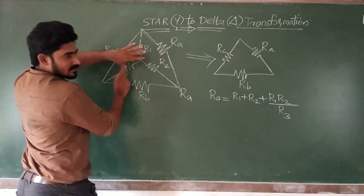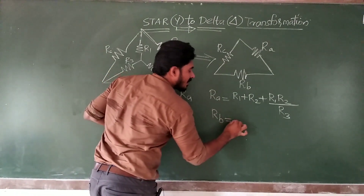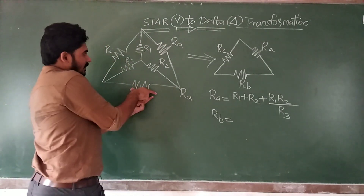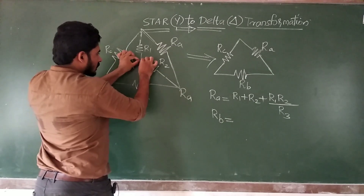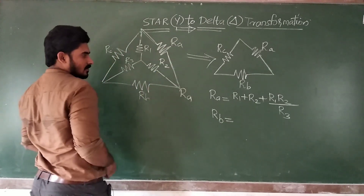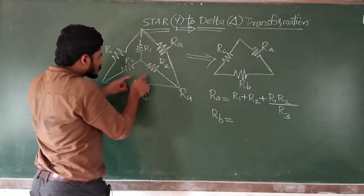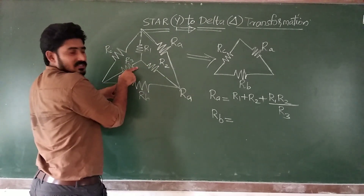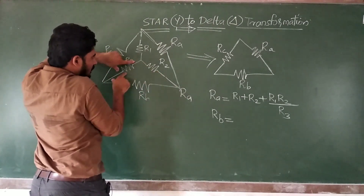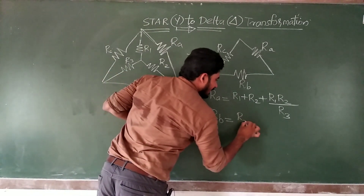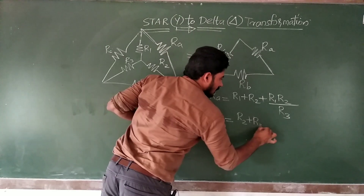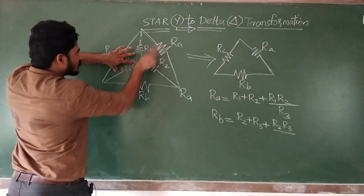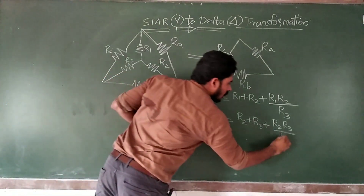Now, what about Rb? How can you find out the value of Rb? In order to find out Rb, you take the two resistors which are connected to Rb — those are R2 and R3. So you take R2 plus R3, plus R2 into R3, divided by the third resistor R1.